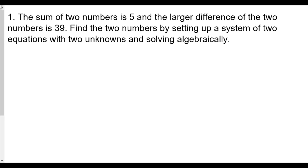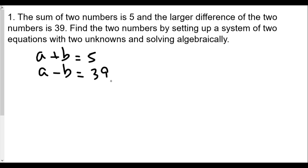Our first question: the sum of two numbers is five and the larger difference of the two numbers is 39. So we say a plus b equals five, and a minus b equals 39. We want to find the two numbers by setting up a system of two equations with two unknowns. A is probably the larger number and b the smaller; their difference gives us a positive 39.